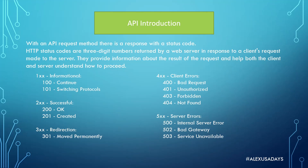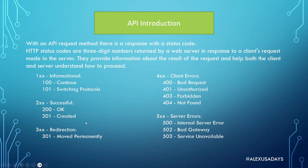Once the request is sent, the server will come up with a response, and this response will include a status code. HTTP status codes are three-digit numbers returned by a web server in response to a client's request. They provide information about the result of the request and help both client and server understand how to proceed. For example, 100-level codes are informational — like 100 meaning 'continue' or 101 meaning 'switching protocols.' The most common response code you'll see is 200. A plain 200 means the response is okay and you successfully retrieved the resource. If you were doing a POST request creating something, you'll get back 201, confirming it was actually created.